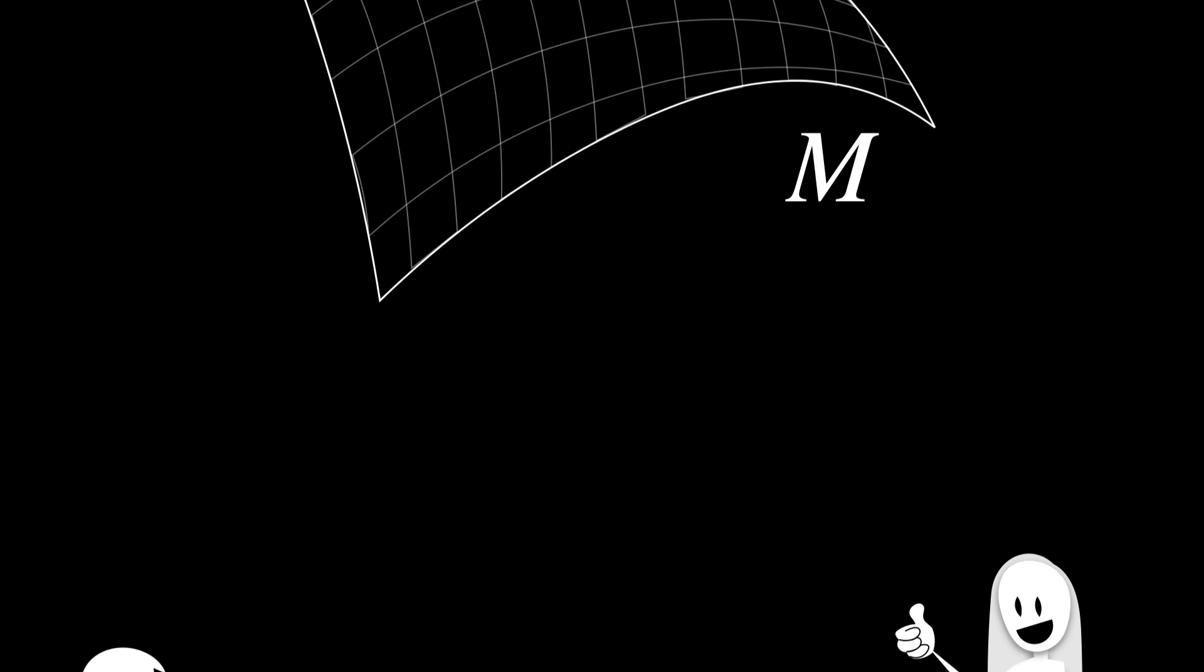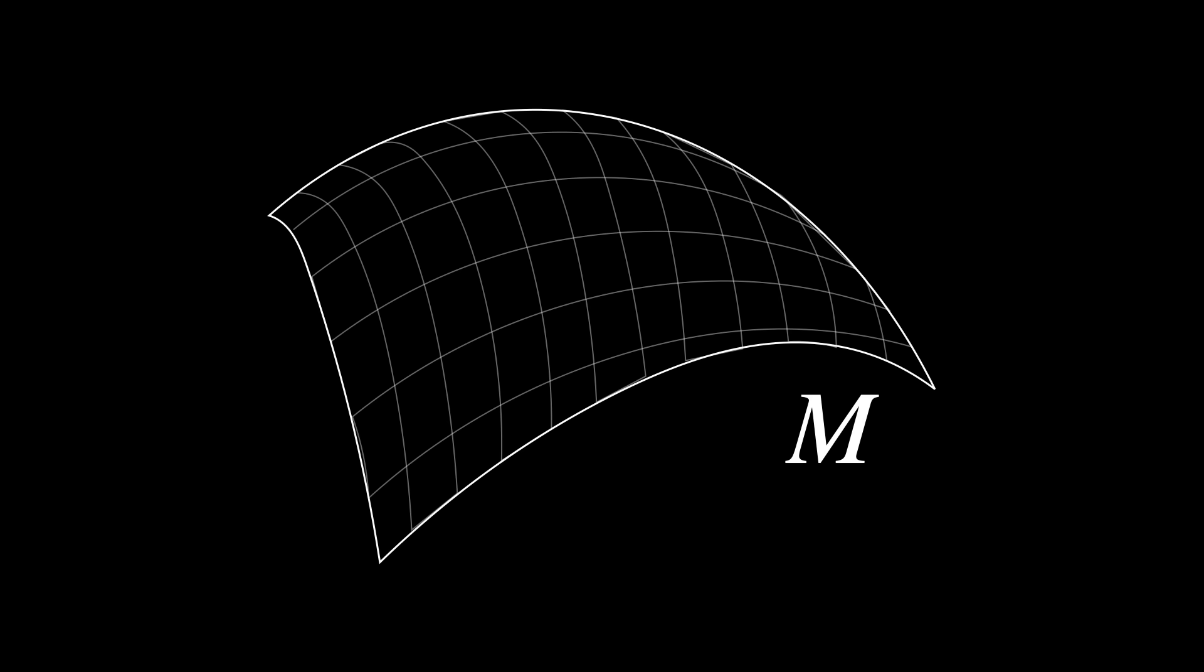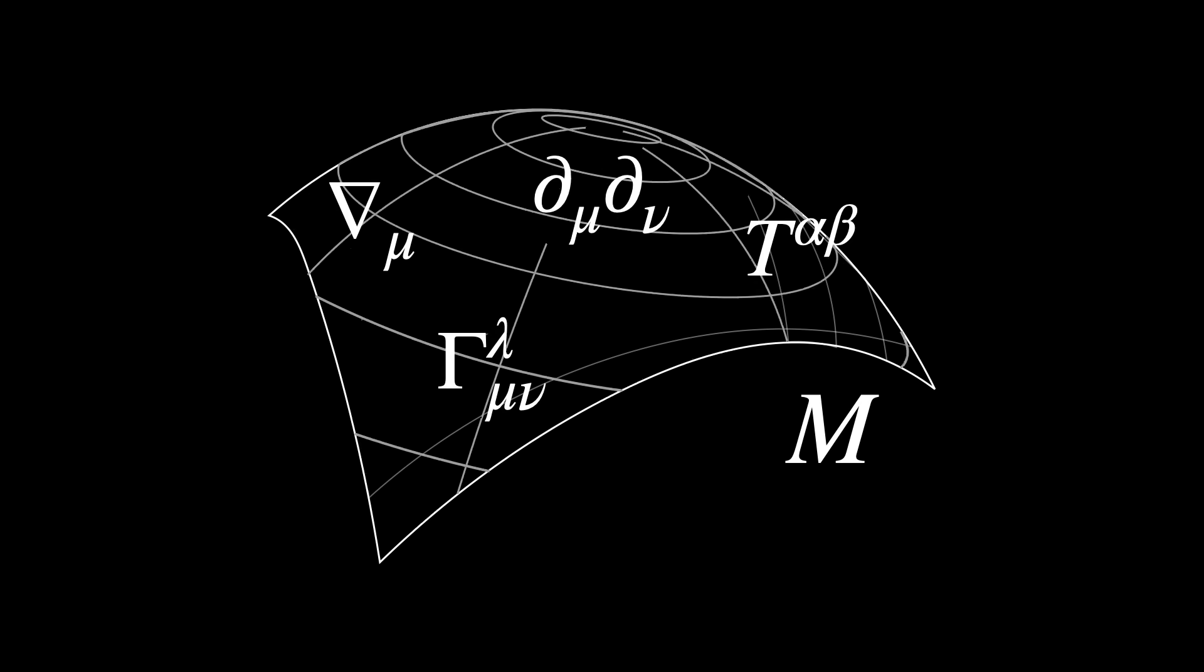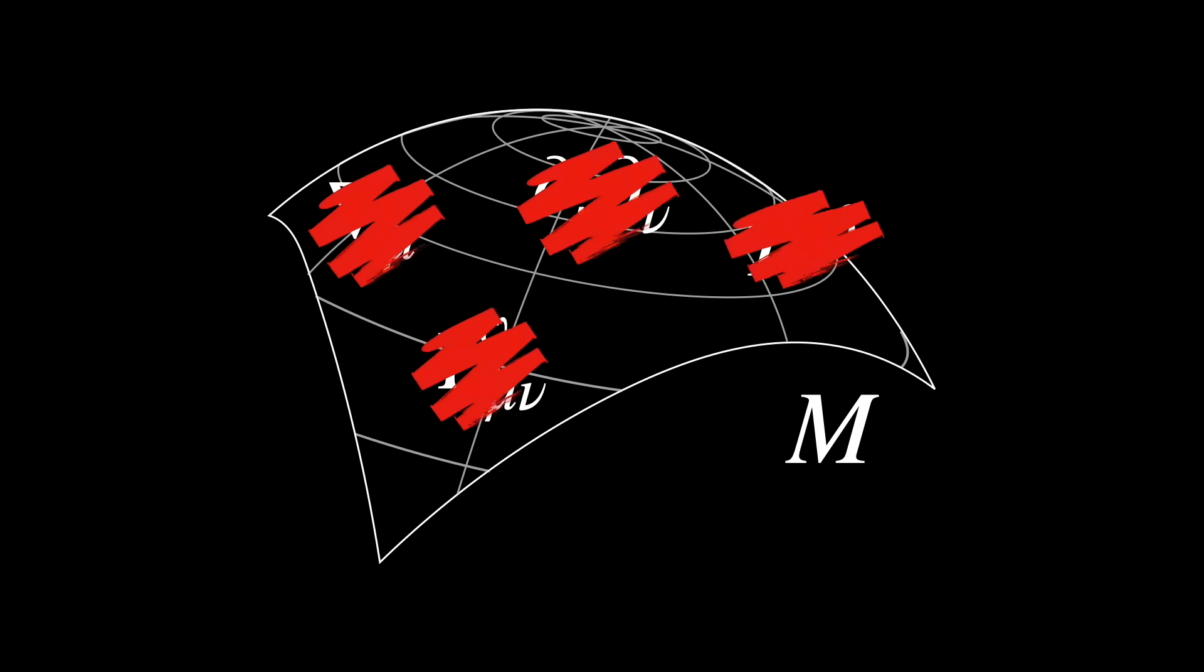A tensor impostor is a mathematical object that really looks like a tensor, especially because of the way it's written with subscripts and superscripts. But when it comes to transforming it from one coordinate system to another, it fails to be consistent.